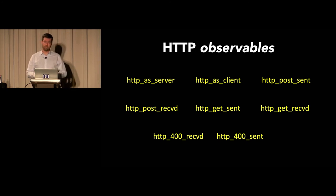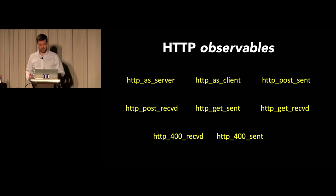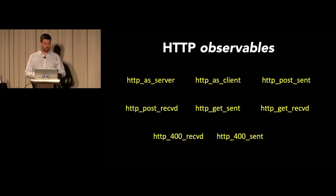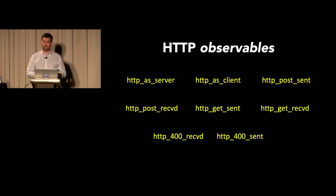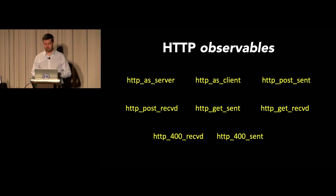The last set of examples are HTTP specific. Very similar in practice — the number of connections an IP address acted as a server or as a client. You can get method specific: break it down by POST sent and received from the perspective of a client versus a server. And then error code responses — whether the server responded with a 400 series error code, or those were received by a client. Also indicative of some abnormal activity going on.